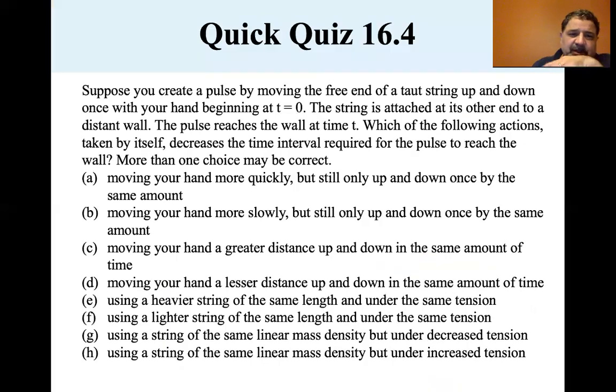Now let's look at this question. Suppose you create a pulse by moving the free end of a taut string up and down once with your hand beginning at t equals zero. The string is attached at its other end to a distant wall. The pulse reaches the wall at time t. Which of the following actions taken by itself decreases the time interval required for the pulse to reach the wall? More than one choice may be correct.